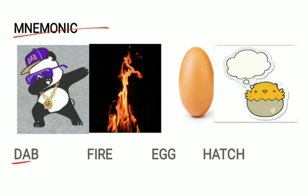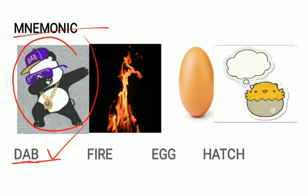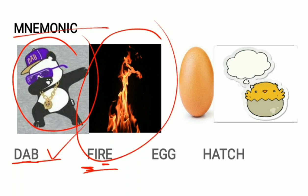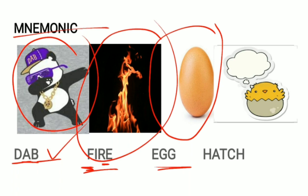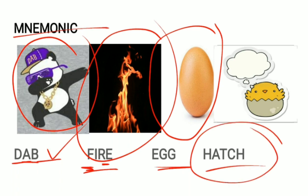To remember the sequence of transcription factors, use the mnemonic DAB: D comes first, then A and B — like a panda doing the dab action. Then transcription factor F comes along with RNA polymerase, so remember FP. Then comes transcription factor 2E — remember it like an egg — and after the egg hatches comes transcription factor 2H.